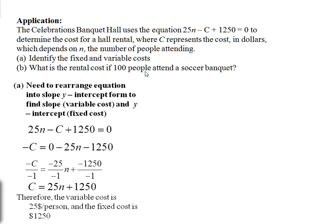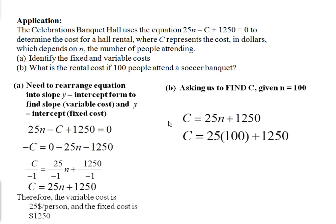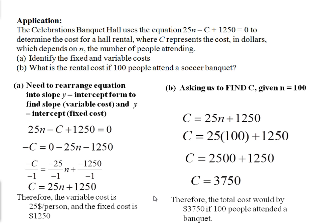So what is the rental cost if 100 people attend a soccer banquet? So what they're asking us to find is the cost, or c, given the number of people attending, or n, is equal to 100. So we'll use the equation that we just determined in part a, and we substitute in that n is equal to 100, and we get that the cost is $3,750. Therefore, the total cost would be $3,750 if 100 people attended a banquet.